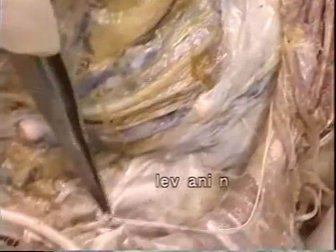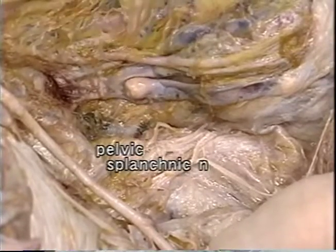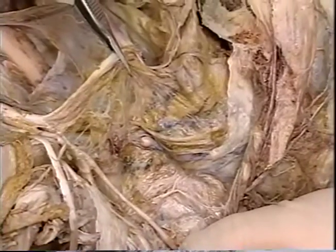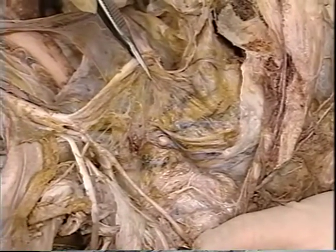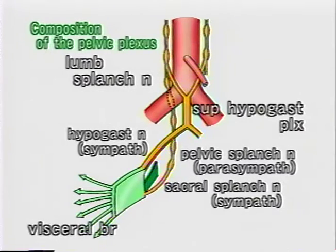Now we will examine the nerves. After reflection of the levator ani, its supplying nerves can be seen. Near the nerve to the levator ani, several thin nerve branches can be seen. These are pelvic splanchnic nerves. To examine these, first we identify and cut the blood vessels. The sympathetic components of the pelvic plexus are the minor sacral splanchnic nerves from the sacral sympathetic trunk and the dominant hypogastric nerves from the lumbar sympathetic trunk via the superior hypogastric plexus in front of the aorta. The parasympathetic components are the pelvic splanchnic nerves from the sacral plexus.